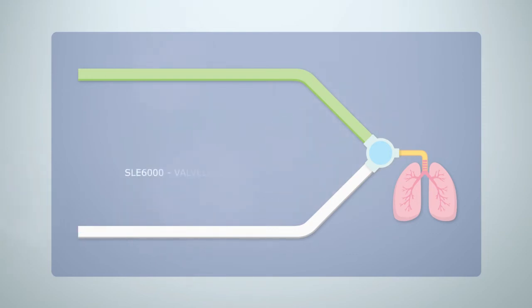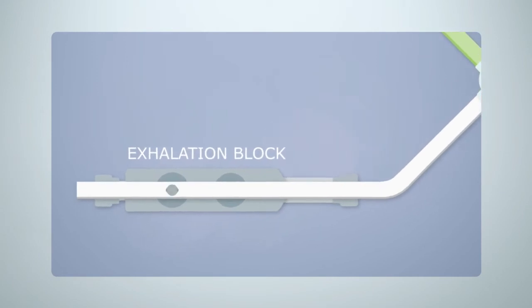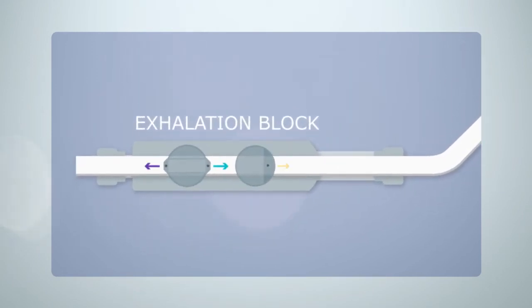The SLE 6000's valveless system is contained within an exhalation block that connects to the expiratory limb ready to control the flow. Inside this block are two turrets that feature three directional jets.